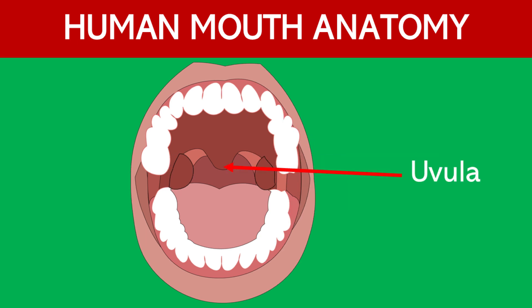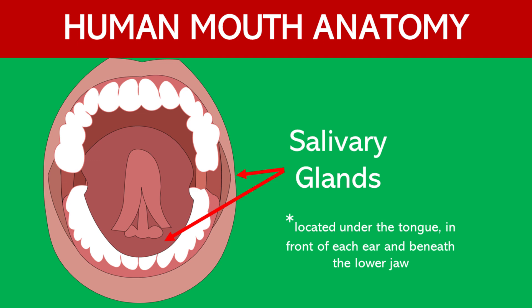Uvula. The uvula is a small, fleshy extension at the back of the soft palate. It helps in speech and in triggering the gag reflex to prevent choking.